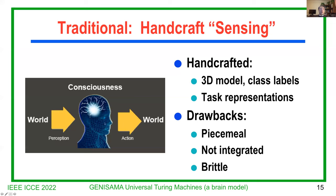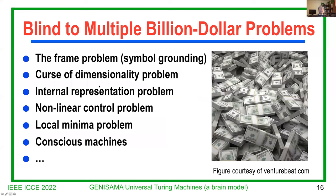The world has perception and generates action. Saying this is consciousness is an oversimplification. We are blind to many multiple billion-dollar questions. The frame problem, the curse of dimensionality problem, internal representation problem, nonlinear controller problem, local minimum problem, consciousness machine problems — these all require a holistic solution. You either have all solutions or none at all. A recent paper I'm drafting has 20 billion-dollar questions holistically solved by the material here. The frame problem has been addressed using emergent representations. LCA solves the curse of dimensionality problem. DN addresses the internal representation problem. APFGP solves the nonlinear controller problem. And local minimum is solved by maximum likelihood optimality — optimal based on three conditions.